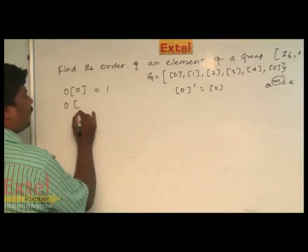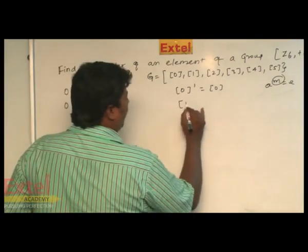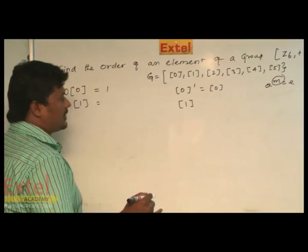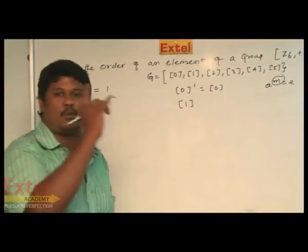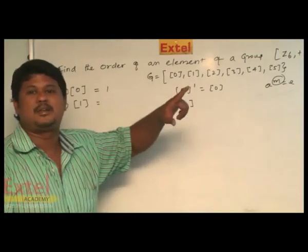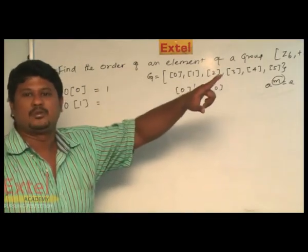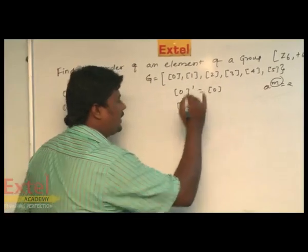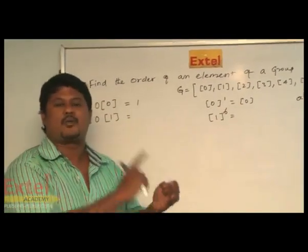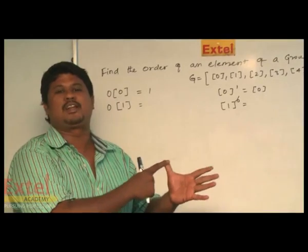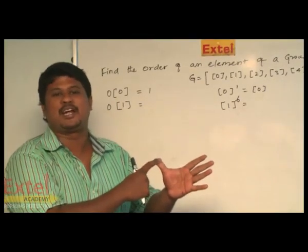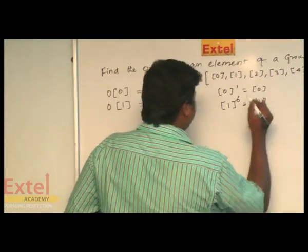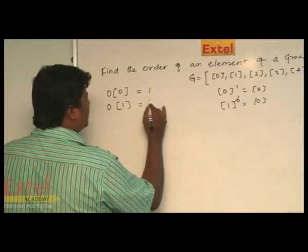Next, order of element 1. For modulo of 1 power 1, we get 1. Modulo of 1 power 2 means 1 plus 1, that is 2. If we put 1 added 6 times, we get 1+1+1+1+1+1 = 6. The modulo of 6 gives the identity element 0 because the remainder is 0. Therefore, the order of element 1 is 6.